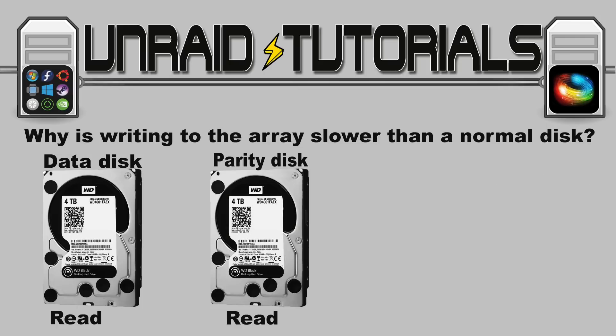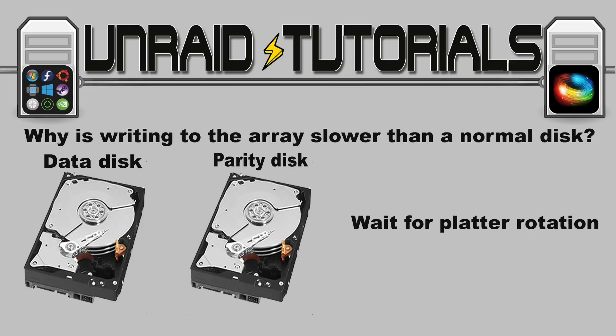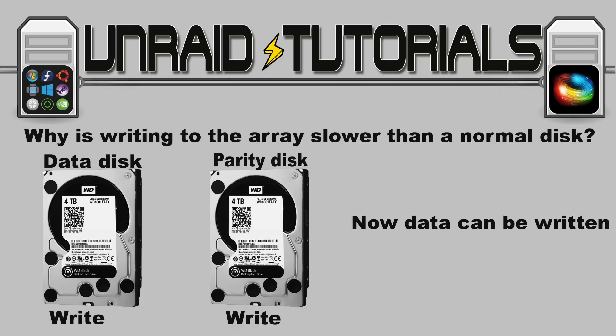When a write is sent to the array, it first reads the sectors on the data drive where the new data is going to be written, and also reads the parity blocks on the parity drive that relate to that data — that's the read part. With those two reads it can calculate the new parity for the data it's about to write — that's the modify bit. But before the write bit, it has to wait for the platter to rotate back around to the correct position so it can finally write the data and the new parity blocks. So it being slower isn't due to two drives being written to — it's basically everything that has to happen beforehand.